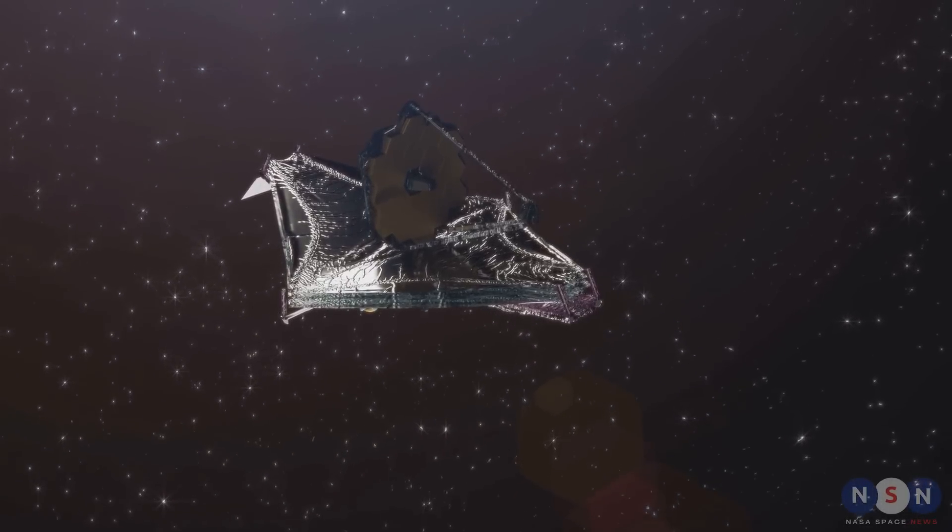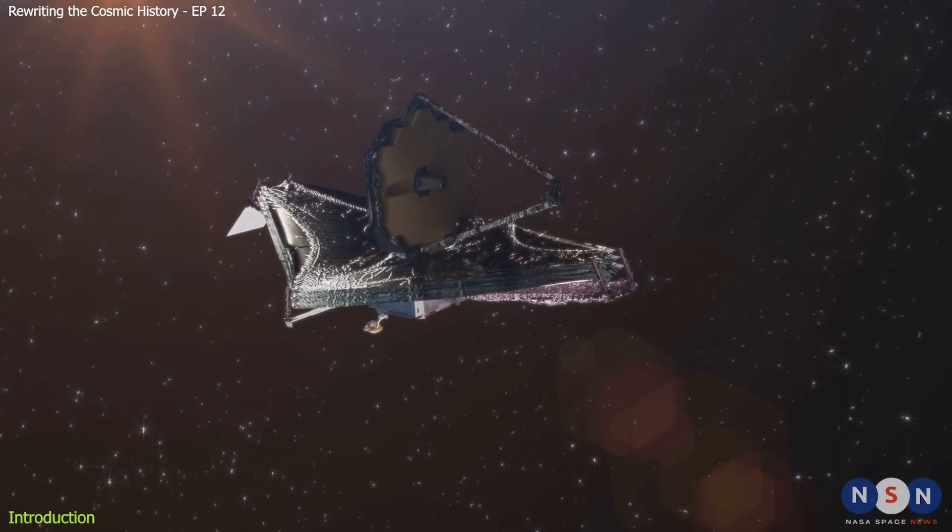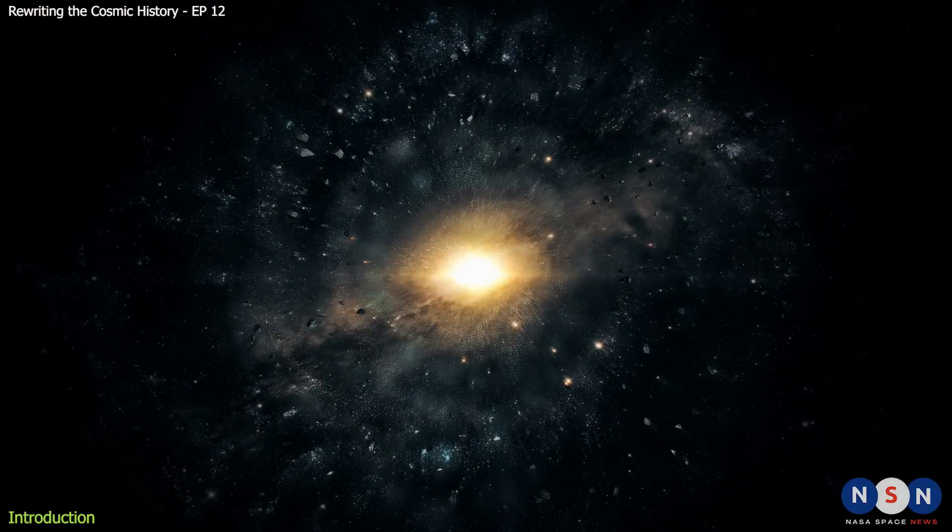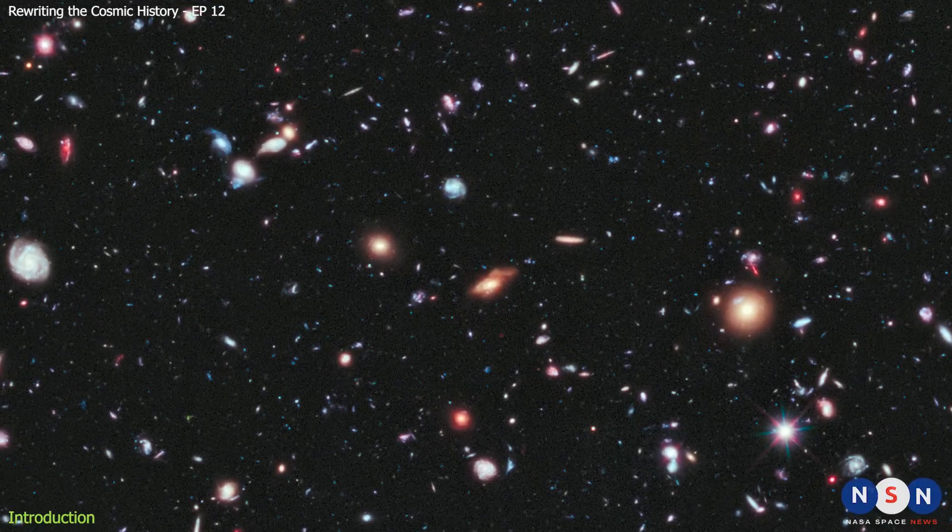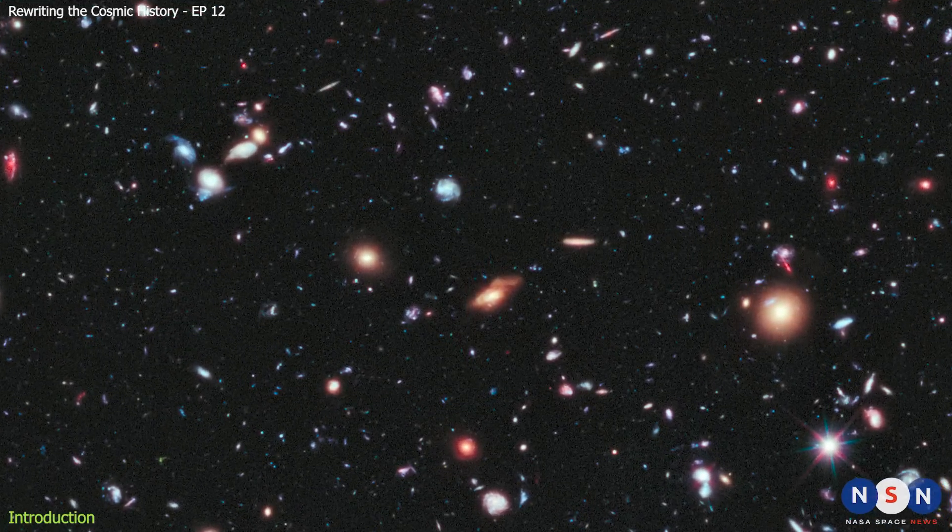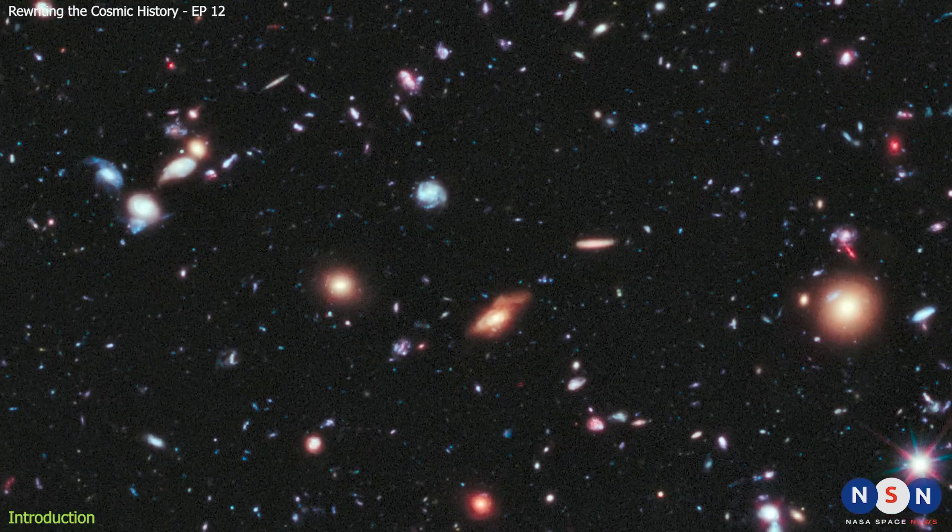Every time the James Webb Space Telescope makes a new discovery, we enter a new era of cosmic exploration. We learn something new and amazing about the universe and its history. And this time, we have a new discovery that talks about star formation in individual galaxies during the epoch of reionization, or Cosmic Dawn, for the first time.